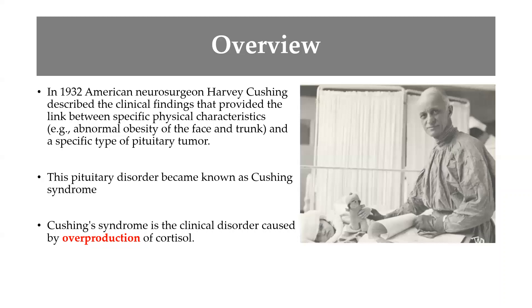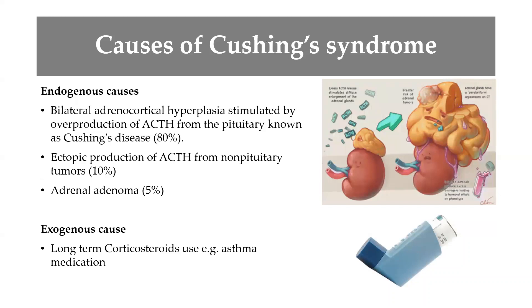Cushing's syndrome is a clinical disorder characterized by overproduction of a glucocorticoid — specifically cortisol. There are several ways this excess production can occur. The main endogenous cause is bilateral adrenal cortical hyperplasia, where the adrenal cortex is over-stimulated as a result of excess production of adrenocorticotrophic hormone (ACTH), which over-stimulates the zona fasciculata and leads to excess cortisol in the blood.